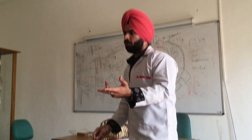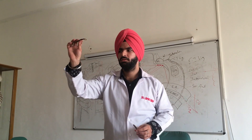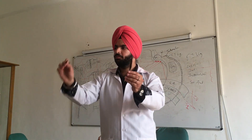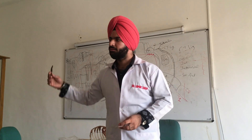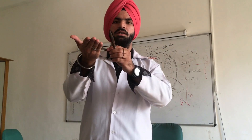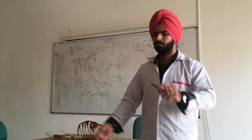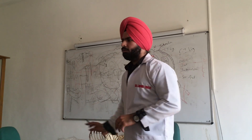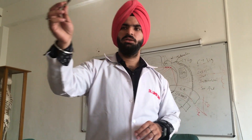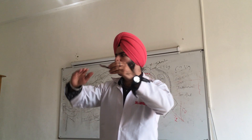Now two more ribs — also called floating ribs. This is the eleventh, this is the twelfth. The eleventh is twice the length of the twelfth rib. The twelfth rib is half the length of the eleventh rib. How will you identify the side? Sharp border on the inferior side, so this is the right twelfth rib. Now an important point: muscle attachment to the twelfth rib — two muscles on the superior border and inferior border.